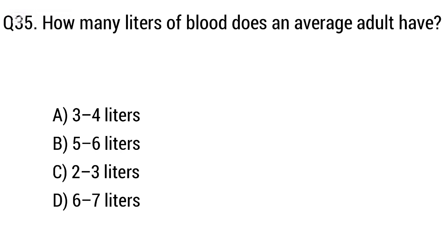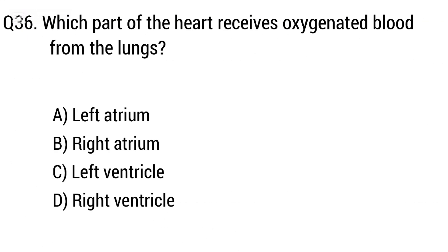Question 35: How many liters of blood does an average adult have? Option A: 3 to 4 liters, B: 5 to 6 liters, C: 2 to 3 liters, D: 6 to 7 liters. The right answer is option B, 5 to 6 liters.